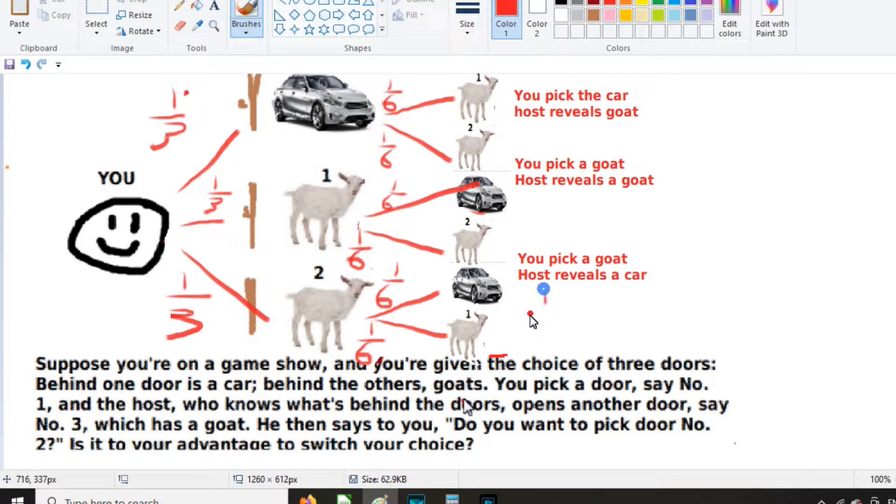But there is a one-third probability that this could happen, or to write it more correctly, it's one-sixth plus one-sixth, because there's a one-sixth chance here and there's a one-sixth chance here.